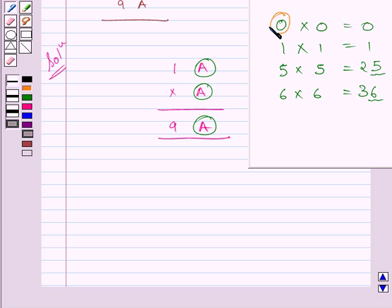So, possible values of A are 0, 1, 5, or 6.